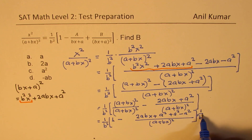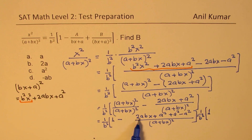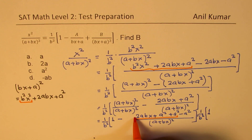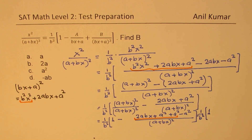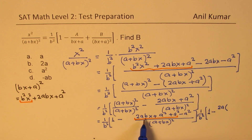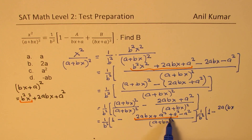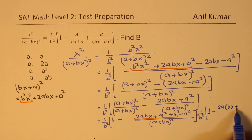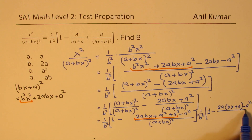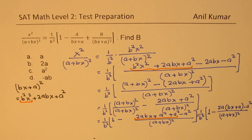Taking 2a common from the combined terms, we are left with bx, and from a squared we take a common giving a, so we have (bx plus a). There is a minus sign, so we have minus a squared. This is divided by (a plus bx), and we can rewrite this expression clearly.